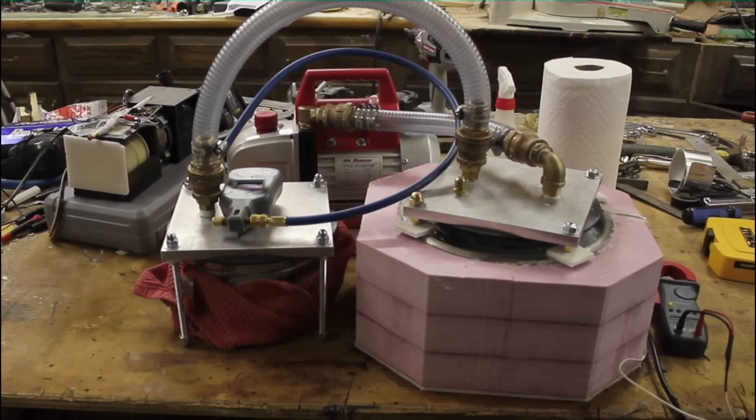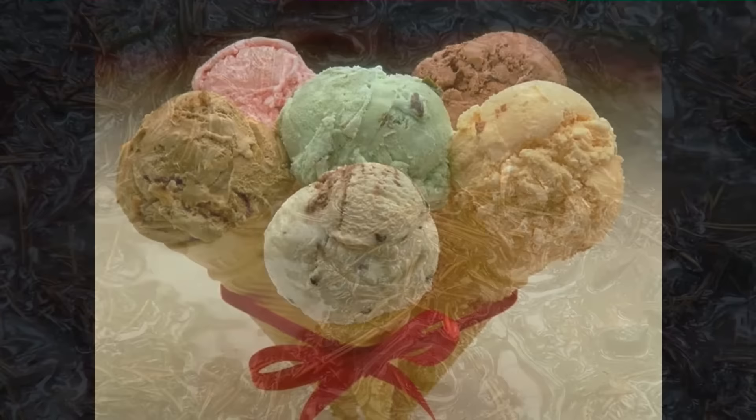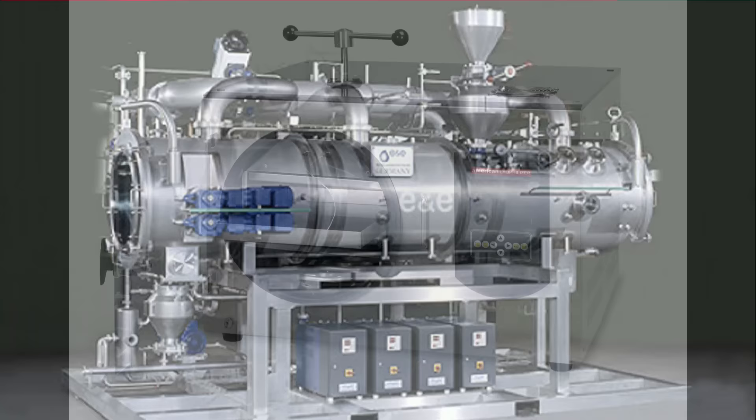This video shows you how to make a freeze dryer. These things work by removing water from food without it melting. Water sublimates at pressures lower than the regular atmosphere, meaning the dryers need to be able to handle a vacuum. Normal freeze dryers cost many thousands to buy, so it does make some sense to build your own.